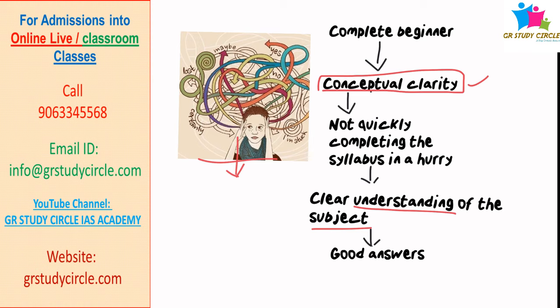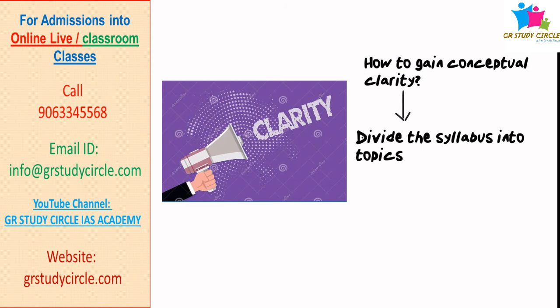With conceptual clarity you can understand what anthropology is, what the topics are, and you can write very good answers. Without a good sound knowledge, you cannot write good answers. Most students are in a very much hurry to complete the syllabus — there's no need to be in a hurry. You need to understand and read each topic. Gaining conceptual clarity is the most important first tip to score 300 plus.